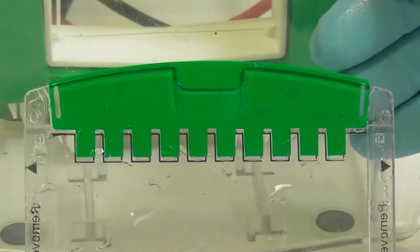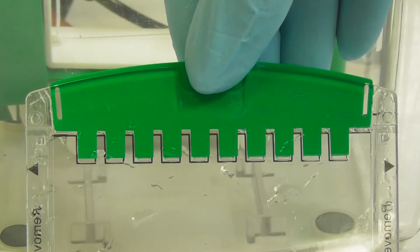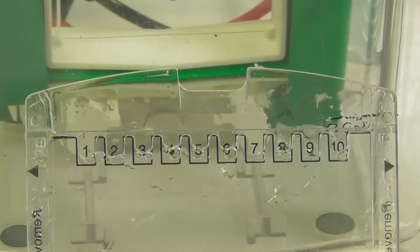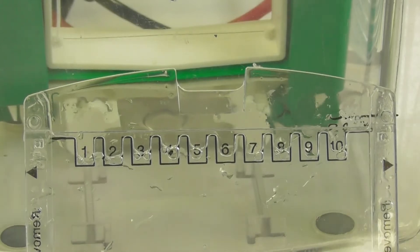The top of the precast gel has the comb which is seated in the wells and this must also be removed before use.